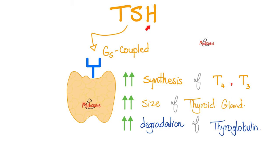Who secretes TSH? The anterior pituitary, under orders from the hypothalamus. What does TSH do? It stimulates the thyroid gland. When I stimulate the thyroid gland, I increase the synthesis of T4 and T3 — thyroid hormone. I also increase the size of the thyroid gland, and when the gland in your neck gets larger, your neck will swell. We call this goiter.